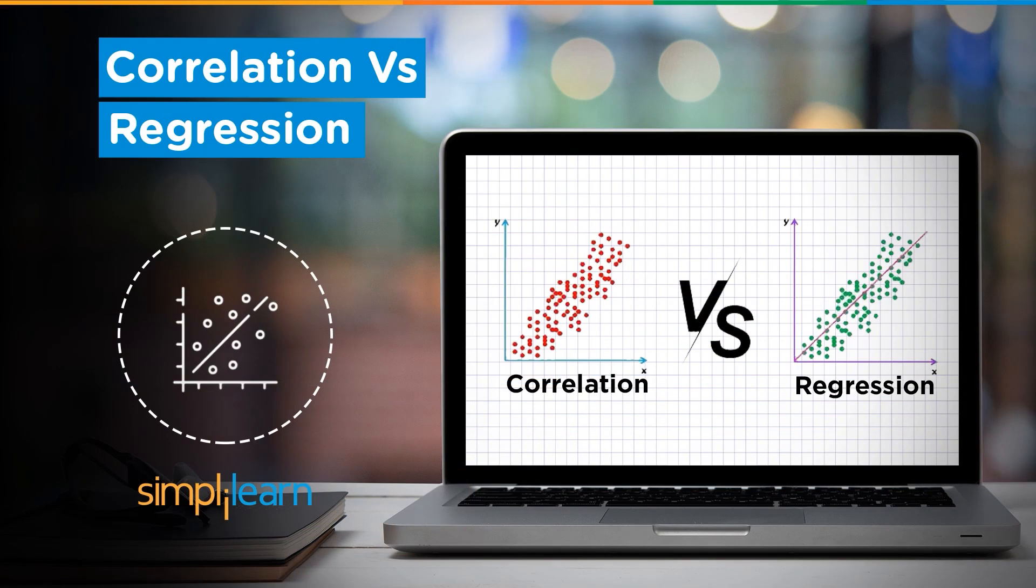Hey everyone, welcome to Simply Learn's YouTube channel. In our previous two sessions, we discussed what is correlation, correlation coefficient and types of correlation. In this session, we'll continue the discussion and try to understand the difference between correlation and regression and discuss it with the help of an example. So, let's discuss the agenda for today's session.